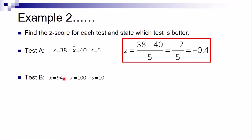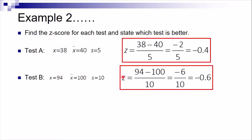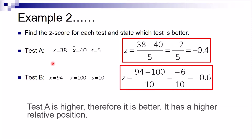For Test B, we have 94 minus 100 divided by 10. Make sure to use the correct values matching the formula: x minus the mean. That gives us negative 6 divided by 10, which is negative 0.6. When comparing two negative numbers, the one closer to zero is greater, so negative 0.4 is greater than negative 0.6. Therefore, Test A is better and has the higher relative position.